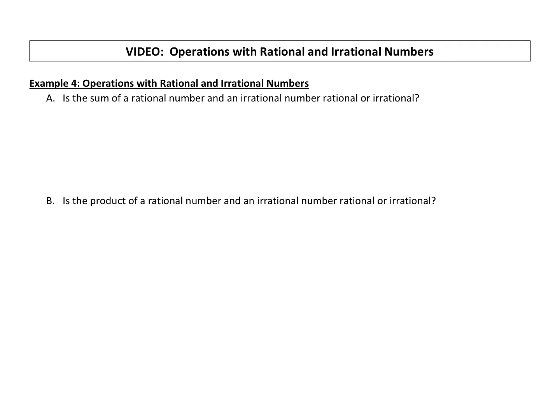Part A: is the sum of a rational number and an irrational number rational or irrational? If you take a fraction and you add an irrational number to it, do you get a fraction or an irrational number back? Let's take a look. One fraction is, let's say, three-fifths. Sum means adding.